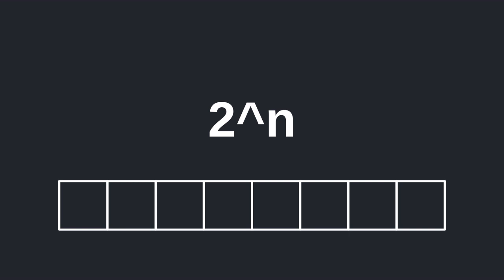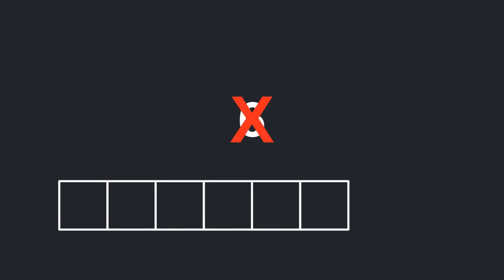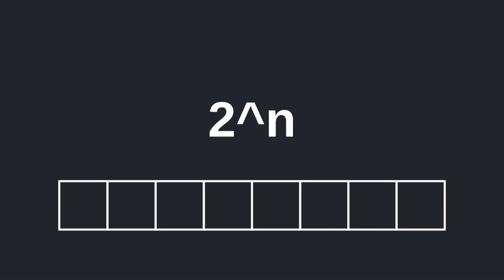For example, the length of the array can be 2, 4, 8, 16, or 32, but it can't be 6 since 6 is not a power of 2. You'll see in a moment why we need an array with a length that is a power of 2.